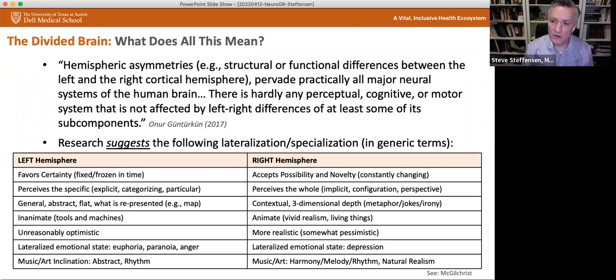The left hemisphere tends to perceive as specific. It likes the explicit. It likes to categorize things and put things in the boxes. It's our way of making sense of the world of being particular about the world, creating a map, for example, which is very useful, but is not a true representation of reality. Even if the map were a life-size map of the world, wouldn't get all of the details of reality, but yet it serves its purpose. And the left hemisphere is very good at that and understanding that. Whereas the right hemisphere tends to perceive the whole. It understands the implicit. It thinks about things from a configurational perspective. It understands perspective a little bit better. The left hemisphere is more general. It tends to be more abstract, flat. It's re-presenting things similar to what the map example I gave you. Whereas the right hemisphere is more contextual, looking at depth, appreciation of depth in three dimensions. It understands metaphor, jokes, irony, in a way that the left hemisphere seems to have a more difficult time in appreciating.